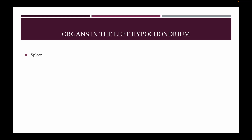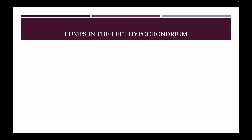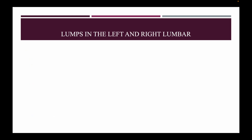Organs in the left hypochondrium: spleen, stomach, left lobe of liver, splenic flexure of colon, tail of pancreas, left subphrenic space, left kidney, and left suprarenal gland. Lumps in the left hypochondrium — in the spleen: malaria, kala-azar, hemolytic anemia, idiopathic thrombocytopenic purpura, porphyria, Egyptian splenomegaly, Felty's syndrome, leukemia, and tumors and cysts.